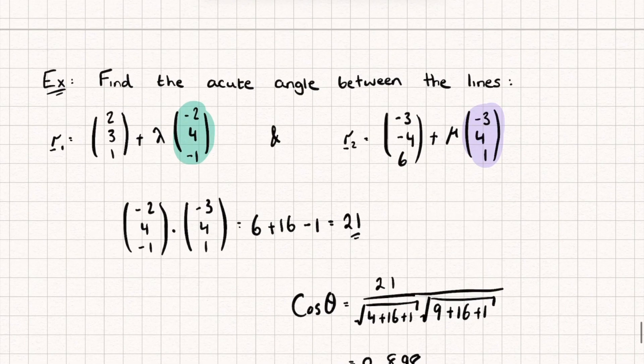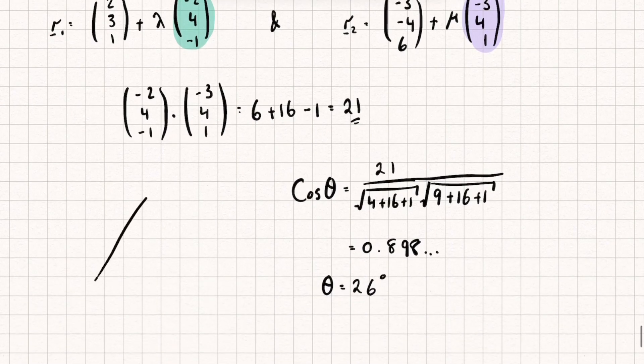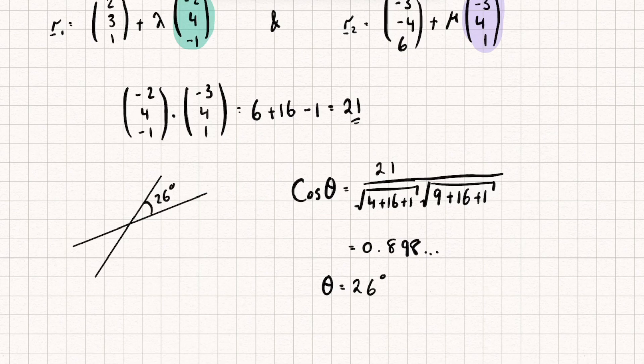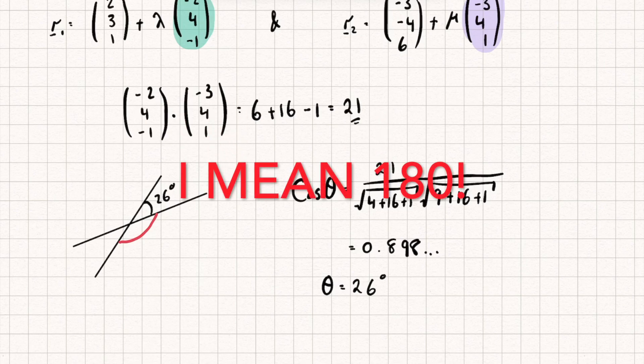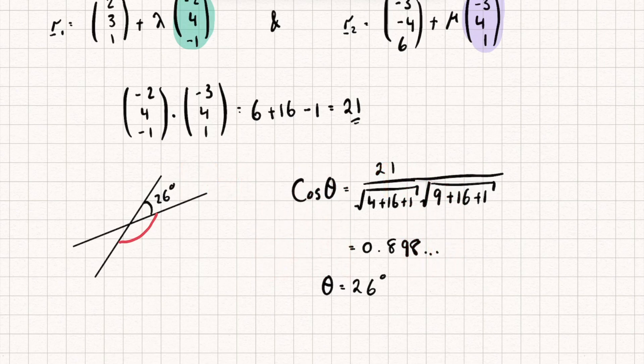Now in the question, we were asked to find the acute angle. So let me draw a quick sketch of what this may look like. So these are our two lines. Now clearly we've found the acute angle straight away, but we could have found this angle here in red. If that was the case, then we would have just done 180, subtract whatever that angle was that we found, and we would have found the acute angle.